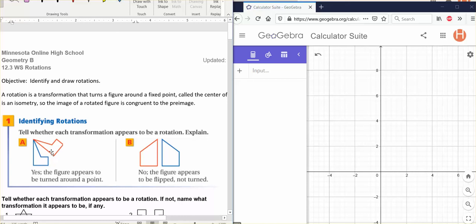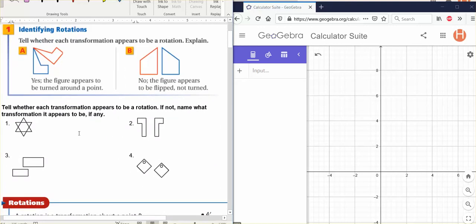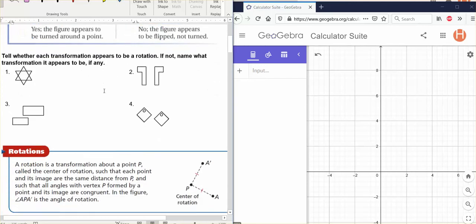So this figure, the red figure, after the rotation will look just like the blue figure, except it will be turned so it's in a different place. We will be rotating about the origin when we do ours. For problems one, two, three, and four, all you need to say is whether it appears to be a rotation, and if not, say if it appears to be a reflection or a translation.